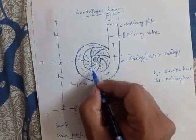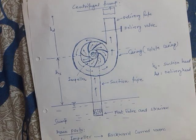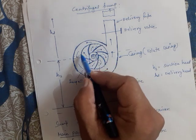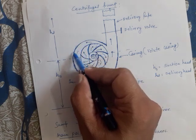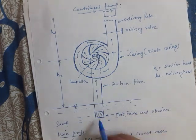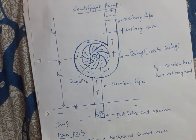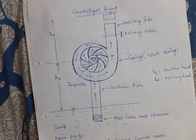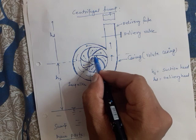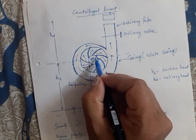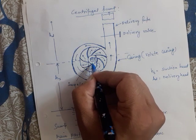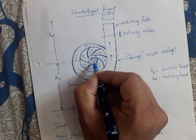The important components of the centrifugal pump are: first, the impeller; second, the casing; third, the delivery pipe fitted with a delivery valve; fourth, the suction pipe; and fifth, the foot valve and strainer. The section at the center of the impeller where water enters is known as the eye of the impeller.